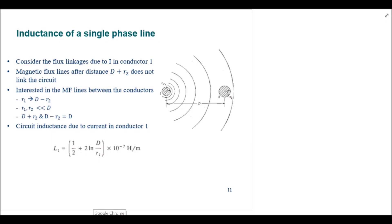In this lecture we are going to find the inductance of a single phase line. There are two conductors in the single phase line: conductor number one has radius r1 and conductor number two has radius r2, and the distance between the two conductors is d. Whenever we are going to find inductance due to current from conductor number one, the current in conductor number two will be considered to be zero.